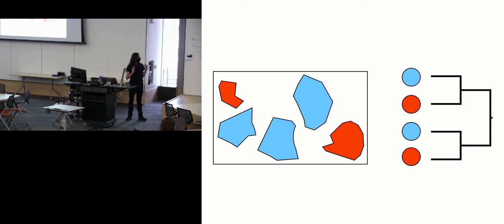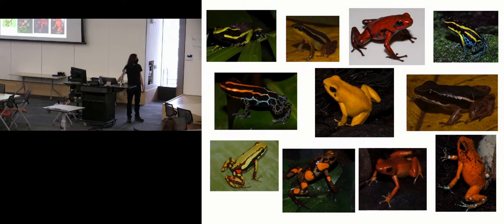When trying to understand what promotes changes in phenotypes, it is very helpful when we have systems where very similar changes occur, for example, in different places of geography or different parts of a phylogeny. Because even though evolution only happened once as a whole process, we can get some commonalities from these replicated instances of our biological phenomenon of interest to try to draw some generalities. And so this is what initially drew me to poison frogs.